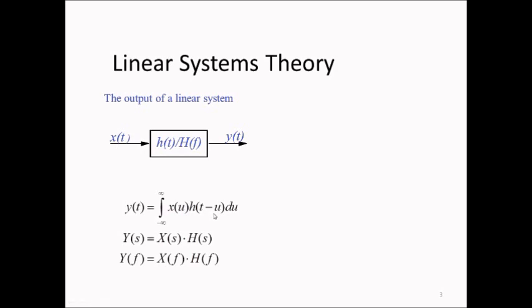I will not explain the convolution in this video, but I have a separate video that I recommend you watch if you are not fully familiar with the convolution integral. Another way of computing the output is to take the Laplace transform: Y(s) equals X(s) times H(s), where H(s) is the Laplace transform of h(t), called the transfer function. We can also use the Fourier transform: Y(f) equals X(f) times H(f), which is the Fourier transform of the impulse response. Note that H(s) and H(f) are completely different functions, even if the notation looks similar.